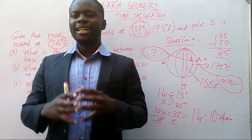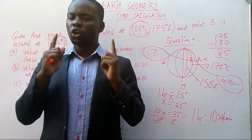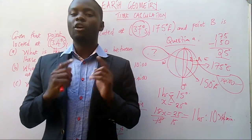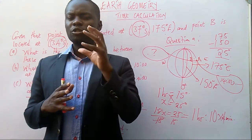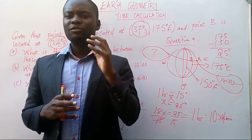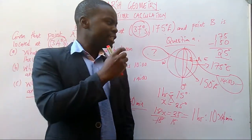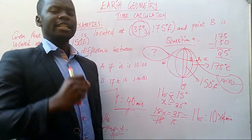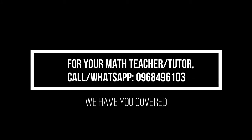In summary: when you want to calculate time, what you must first know is the difference in longitude. When you know the difference in longitude, you can find the time difference across the two longitudes. When you know that, you are home and dry — it's just a matter of knowing whether to add or to subtract. Make sure you also watch the next video coming tomorrow on speed, because speed relies upon the time calculation covered here. Thank you very much.